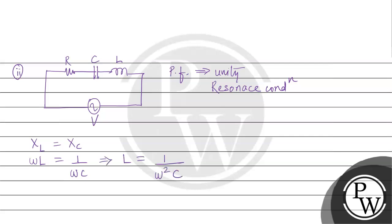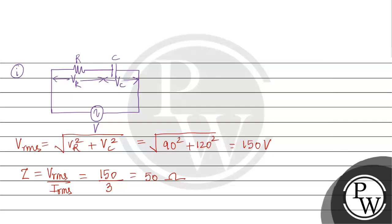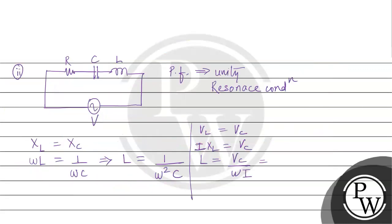At resonance, the voltage across the inductor VL equals the voltage across the capacitor VC, which is 120 volt. Using VL equals I times XL equals I times omega L, we get L equals VC divided by omega times I. With omega equal to 2 pi f, where f is 50 Hz, and current 3 ampere, the value of L works out to approximately 0.127 H.